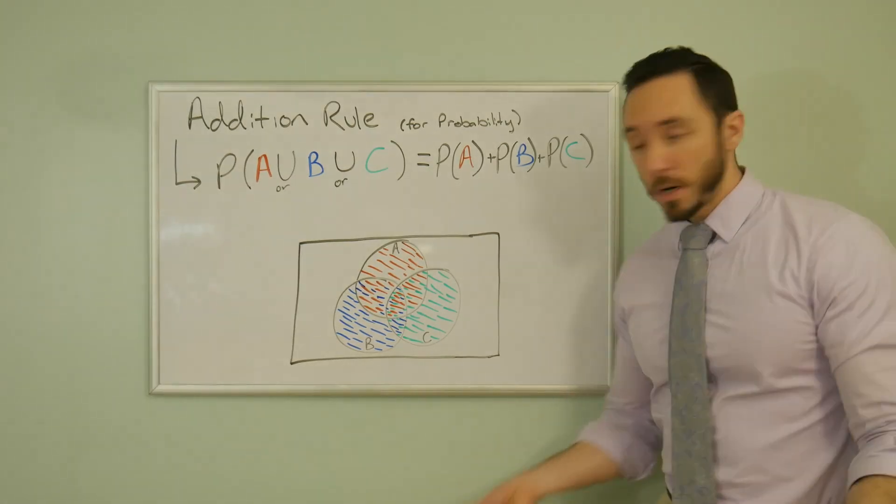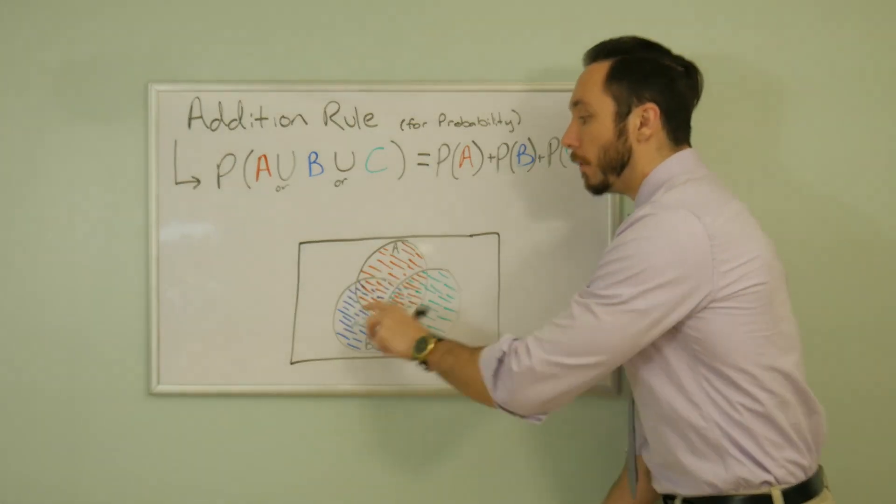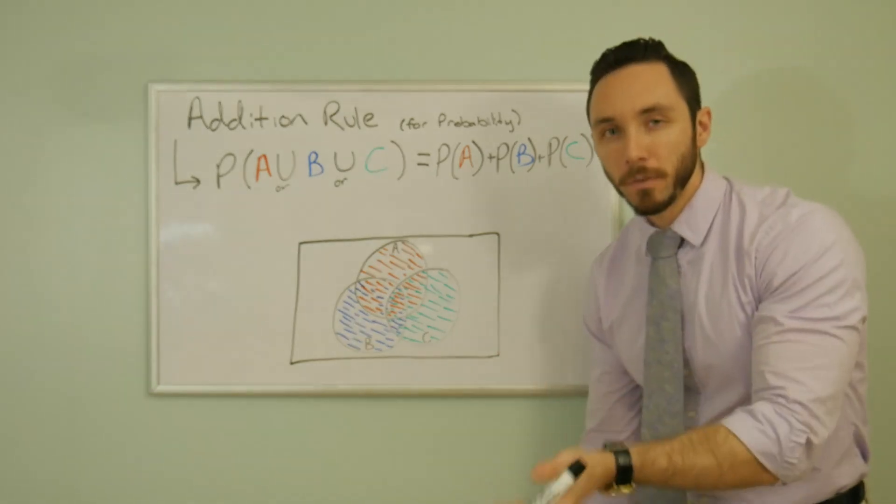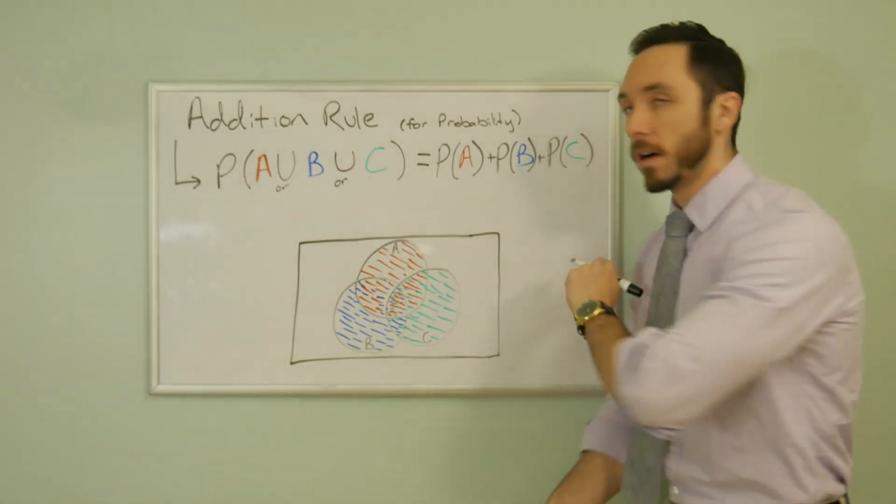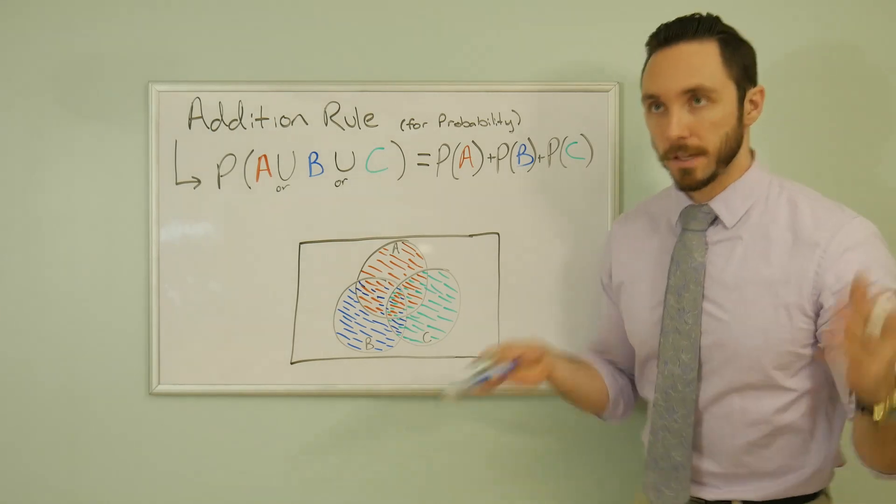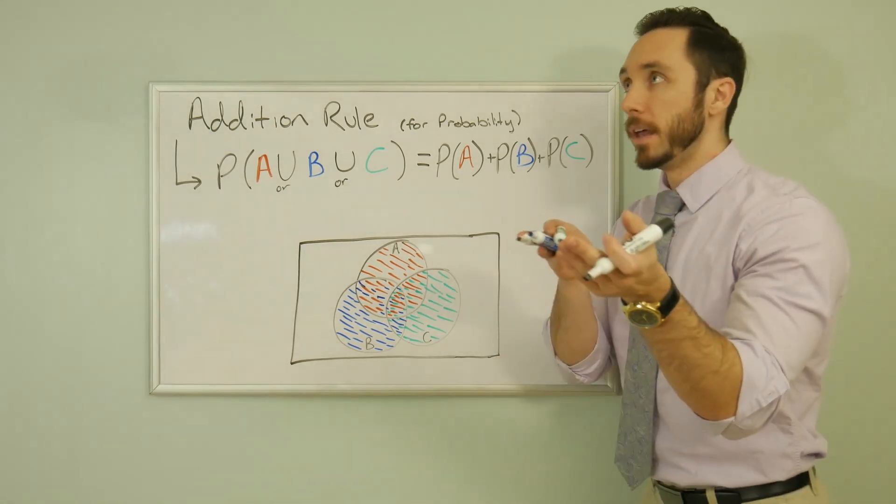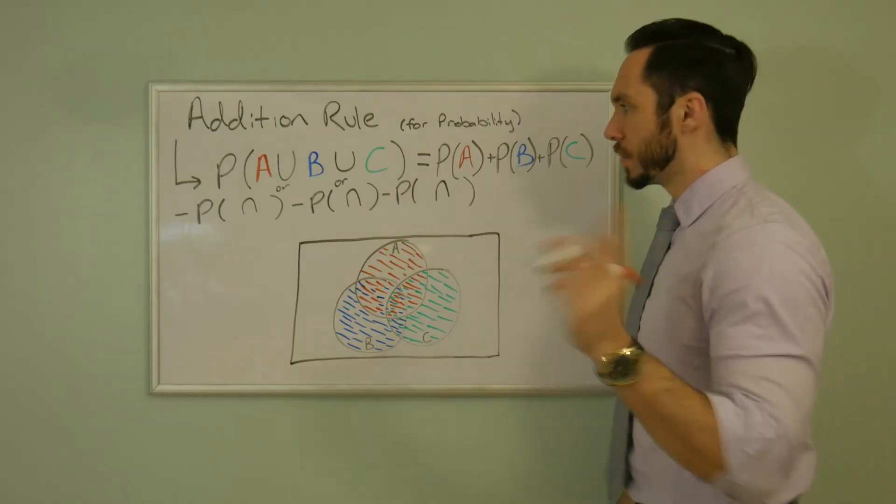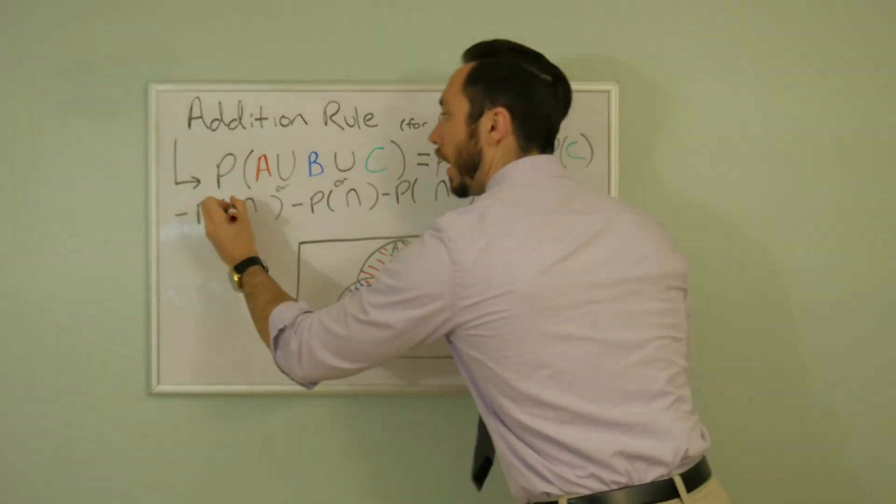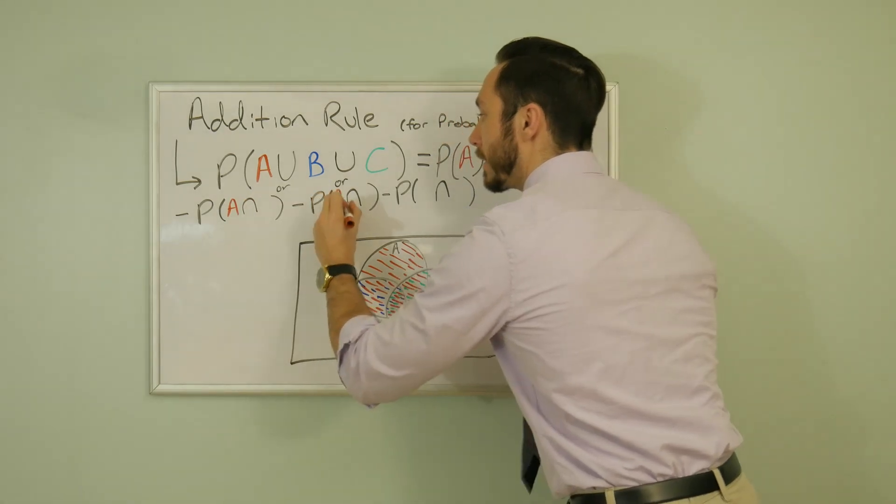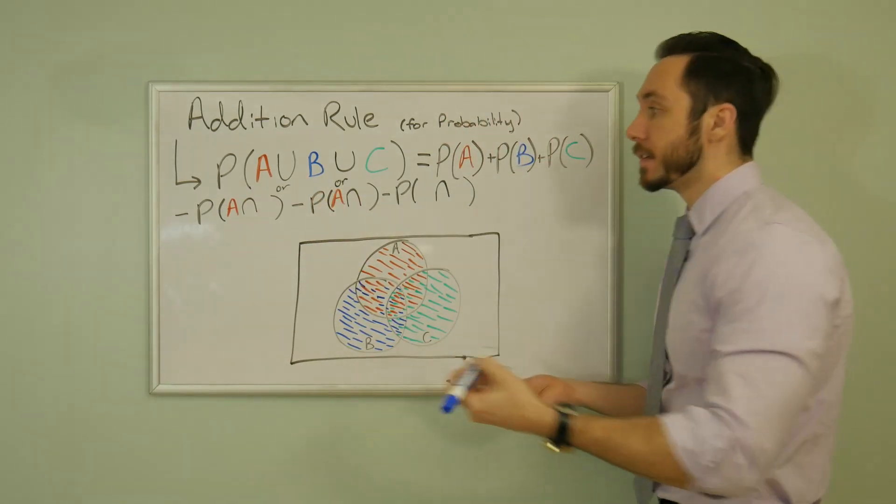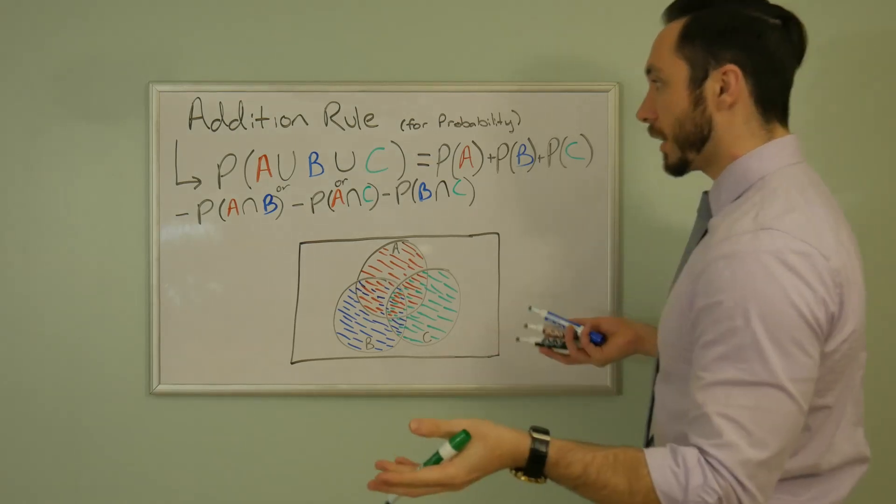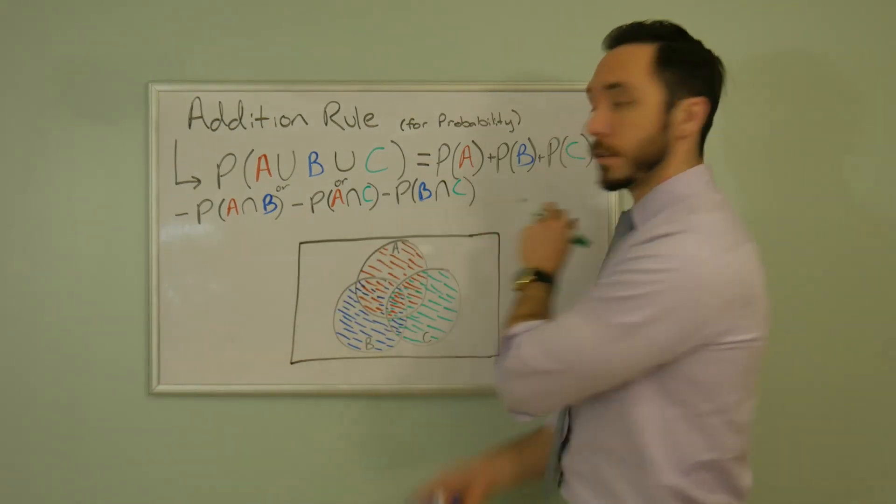So let's start subtracting off some of those subsections. We don't want this overlap, right? As we're trying to avoid similar to the case of just two events. So let's subtract off all three intersections, A and B, B and C, and then A and C. So let's subtract off A and B, A and C, and then B and C now. Just double check to make sure we have every combination. Looks good to me.